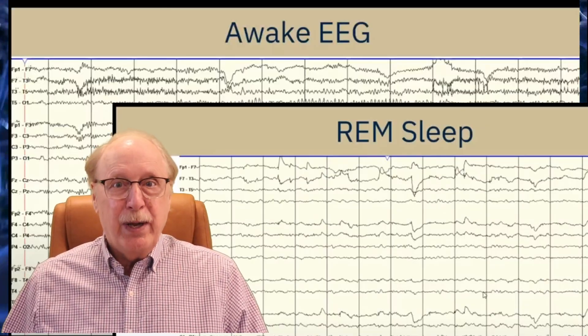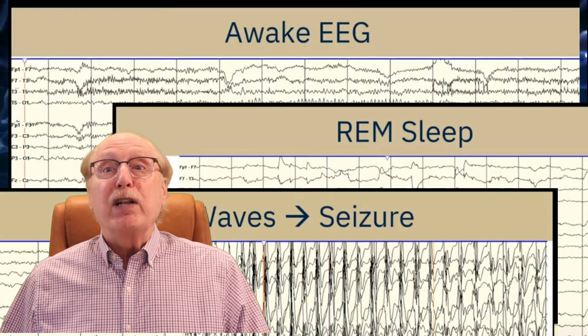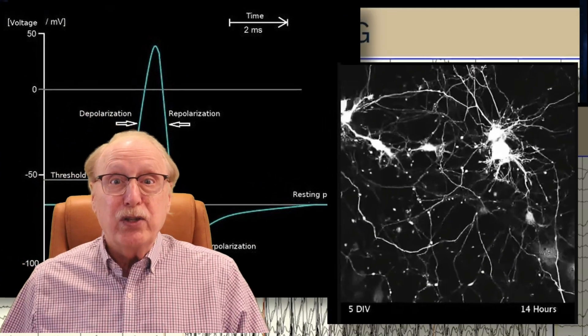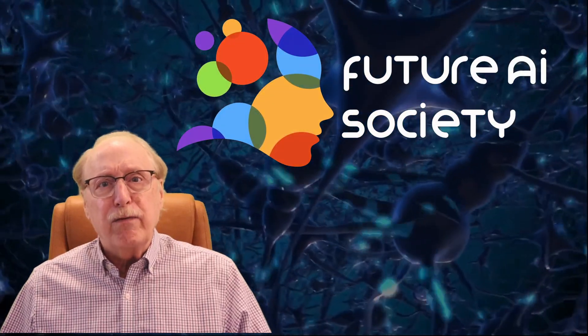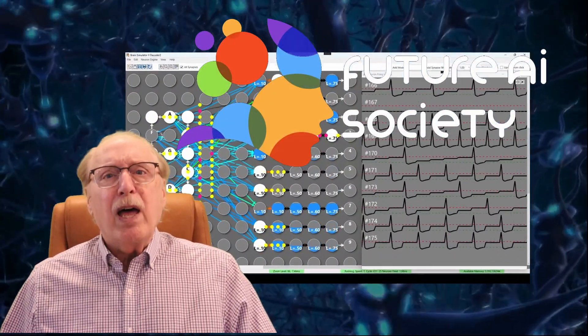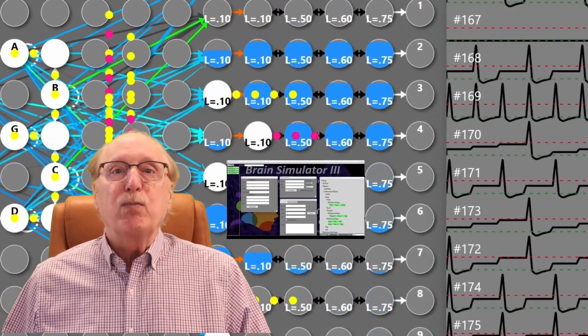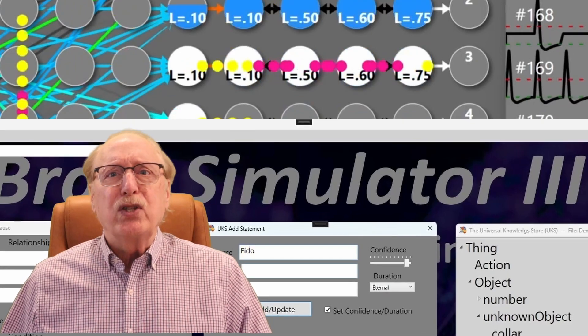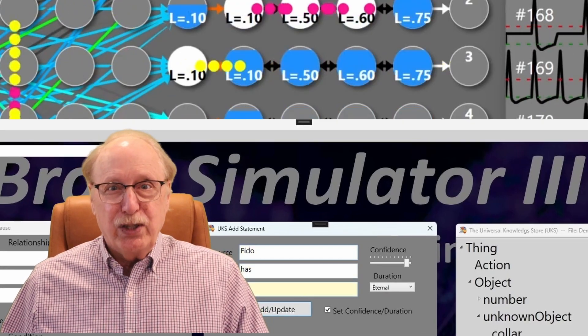I'm Charles Simon, long-time AI researcher, software developer, and manager. Beyond AI, I've developed software for neurological test instruments and neuro-simulators. I created the Future AI Society to explore how neuroscience can inform smarter, more human-like AI. A lot of effort has gone into our open-source brain simulator projects, and I'll be using them throughout this series for simulations and demonstrations.